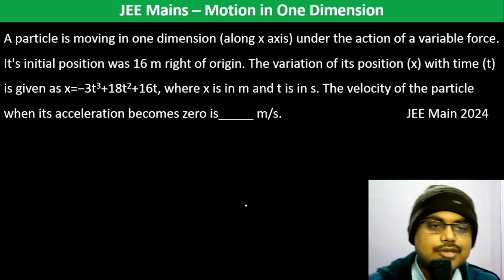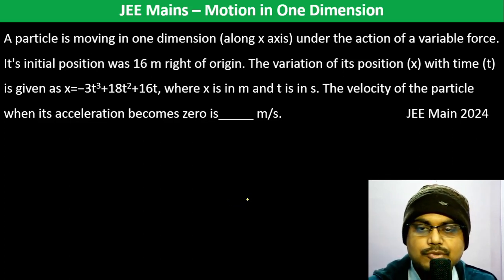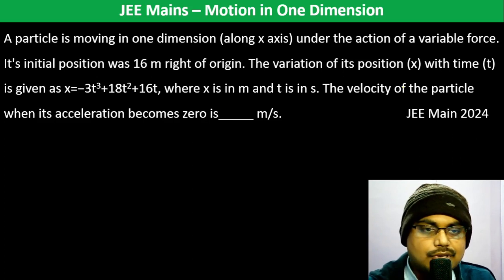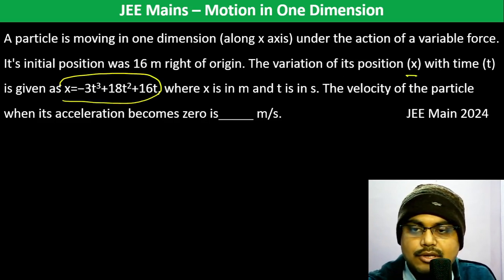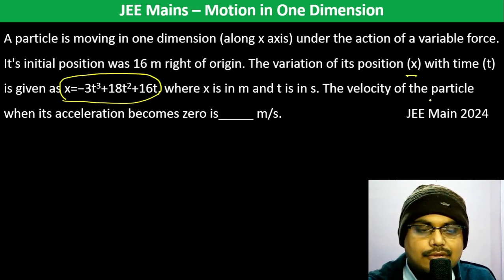A particle is moving in one dimension under the action of a variable force. Its initial position was 16 meters right of origin. The variation of position x with time t is given as x = -3t³ + 18t² + 16, where x is in m and t is in s. Find the velocity of the particle when